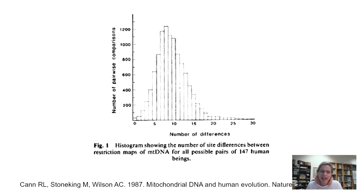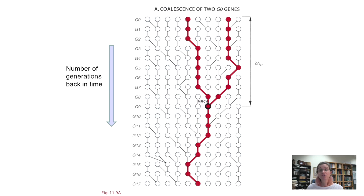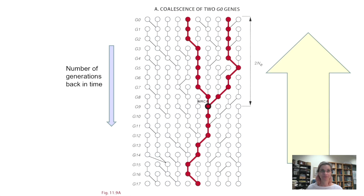How do you do something with this? This is the super clever part. Let me introduce you to the concept of coalescence. This figure shows ten individuals across horizontally, with the y-axis showing time — G0 being generation zero, which is today. As the generation number increases, you're going farther and farther back in time.